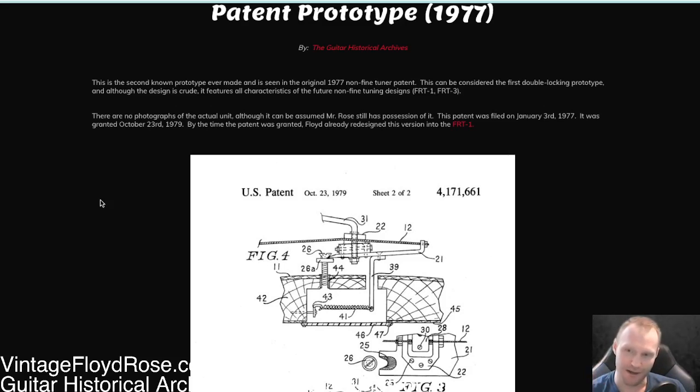This is believed to be the second prototype made, although there could have been a few variations in between that we don't know about. What's interesting about this one compared to the brass prototype number one that I talked about in the last video is that this one you're really starting to see more of the Floyd Rose features that you notice today in the earliest non-fine-tuning production versions with a few curious details.